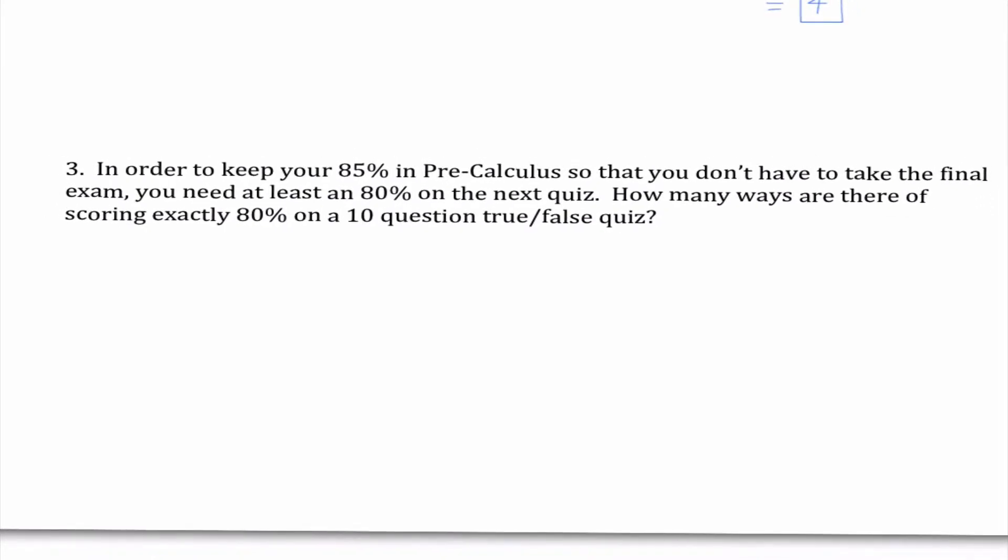So let's get into an actual problem here. So for all you seniors out there in order to keep your 85 percent in pre-calculus so that you don't have to take the final exam you need at least an 80 percent on the next quiz. How many ways are there of scoring exactly an 80 percent on a 10 question true false quiz? So the very first question we need to ask ourselves is is the order important? Does it matter which eight questions I get right? And the answer is no. So since the order doesn't matter I know it's going to be a combination.